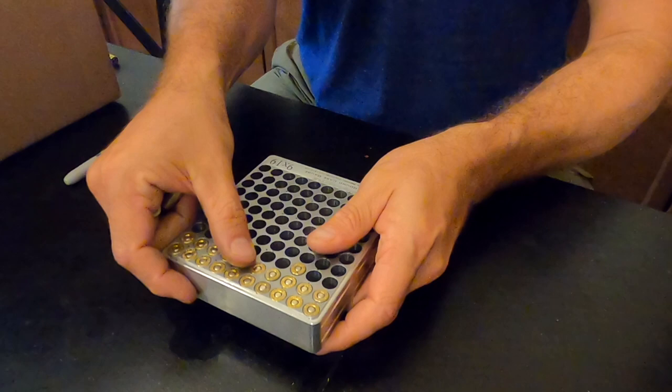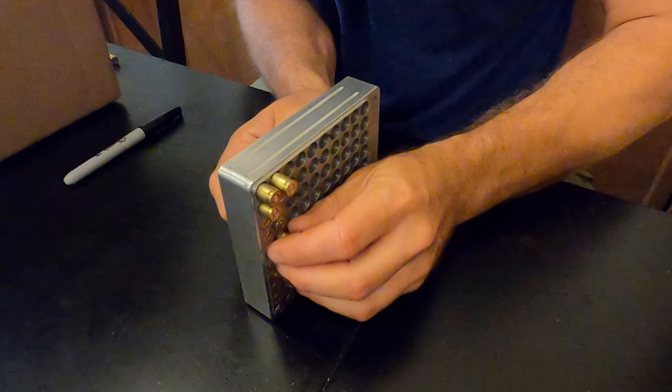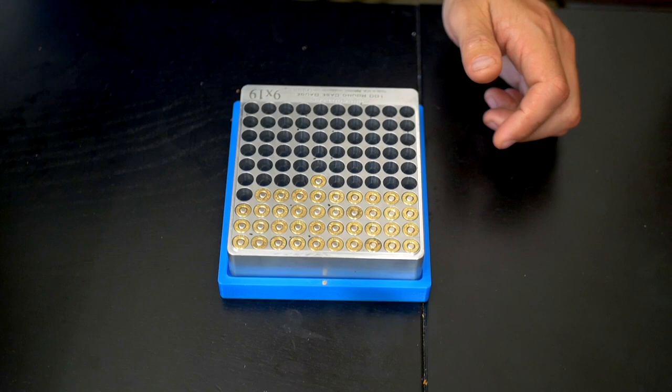When you lay the hundo flat on the table, rounds that pass gauge will still stand proud of the gauge, requiring you to periodically lift up and check for bad rounds. It's not a big deal but it's not ideal. Using the flip tray as a stand, you can rapidly cull a bad round and keep gauging.